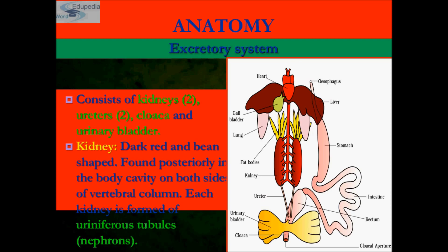As you can see, this is the kidney, these are the ureters, this is the urinary bladder, and this is the cloaca. The kidney is composed of several structural and functional units called uriniferous tubules or nephrons.